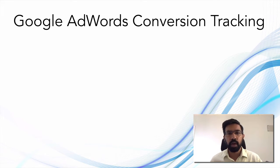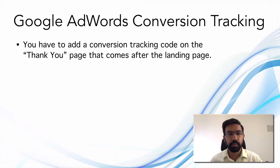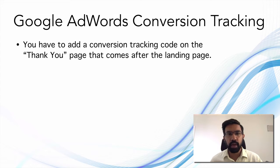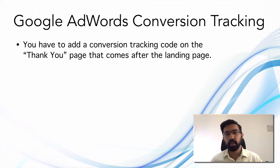Let's look at Google AdWords conversion tracking. Conversion optimization and conversion tracking is a very large concept, but in this lesson we are going to look at conversion tracking only from the AdWords perspective. You have to add the conversion tracking code on the thank you page that comes after the landing page. Taking the example of my own landing page, LearnDigitalMarketing.com — as soon as people fill up the form on the landing page, they go to a thank you page. We place the conversion tracking code there, and that is how Google or any other tool will know that a particular click has actually converted.